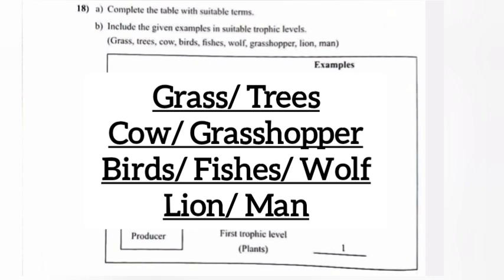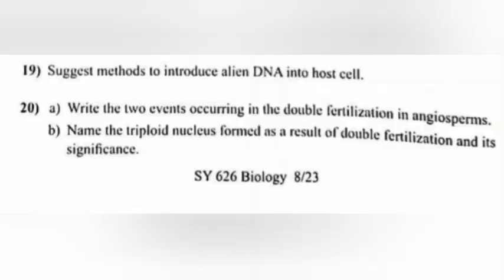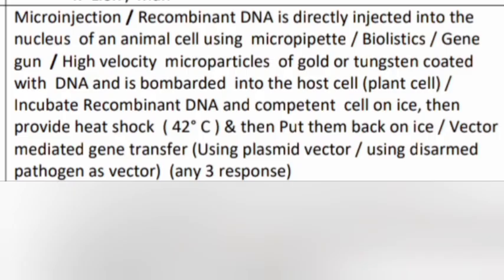Question 19: Suggest methods to introduce alien DNA into host cells. Answer: Micro-injection — recombinant DNA is directly injected into the nucleus of an animal cell using a micro-pipette. Biolistics (gene gun) — high-velocity microparticles of gold or tungsten coated with DNA are bombarded into the cell.